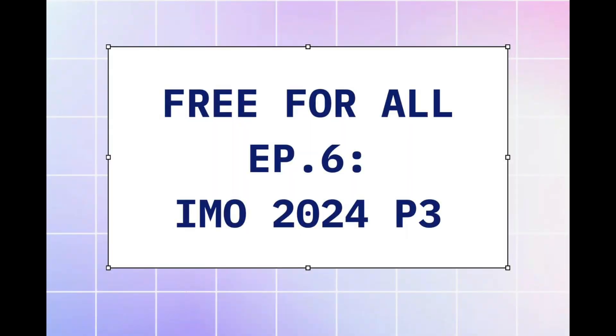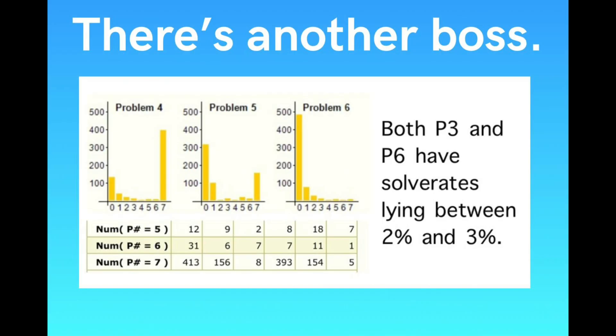A few days ago, while I was trying to record for problem 3 of IMO 2024, which I just uploaded yesterday, I was trying to do the IMO Day 2 contest by myself, and I learned that problem 3 was not the only exceedingly difficult problem on the test. Problem 6, if you look at the statistics shown on the video right now, it's equally brutal, getting around the same solve rate as P3, and when I did it, I couldn't solve it in time — it took me like 7 hours total to solve problem 6, with a really bad and messy solution.